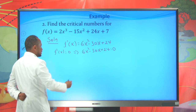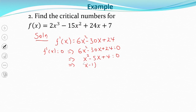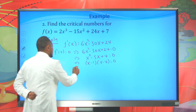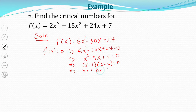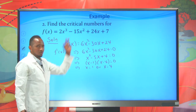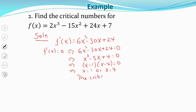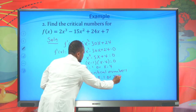So 6x² - 30x + 24 = 0. Dividing by 6, you get x² - 5x + 4 = 0. Factoring this, you get (x - 1)(x - 4) = 0. So the derivative of our function will be 0 at x = 1 or x = 4. Since the derivative is 0 at these two points and these points are in the domain of our function, the critical numbers are x = 1 and x = 4.